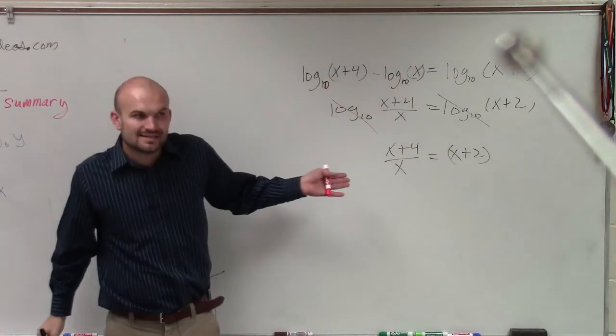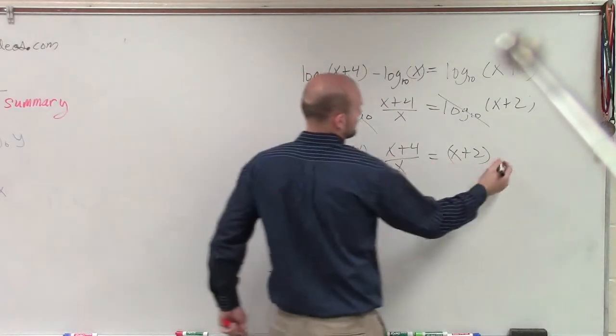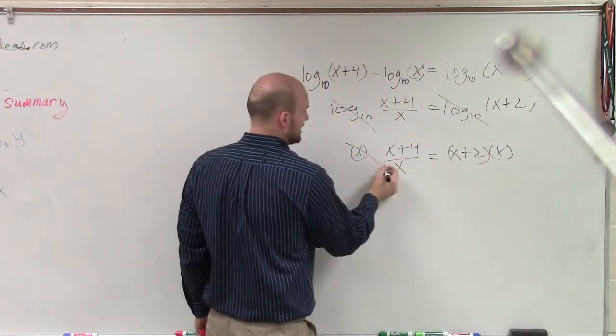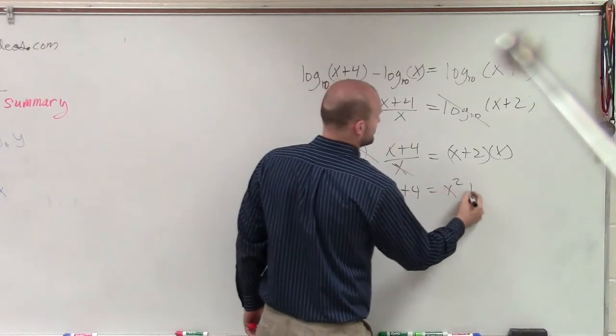Now, again, to solve for this, we need to multiply by x on both sides. So therefore, I have that goes to 1. So I have x plus 4 equals x squared plus 2x.